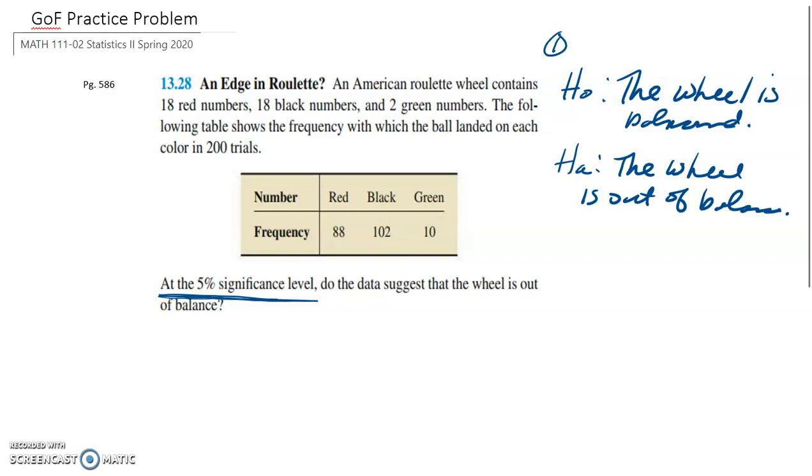And what does that mean? If the wheel is balanced, then our observed values that we have here in the problem should fit what we expect to get. We are trying to determine if there's enough evidence in this sample to say, if there's enough evidence here within this sample that these numbers are not near our expected values, then we can go ahead and say the wheel is out of balance.